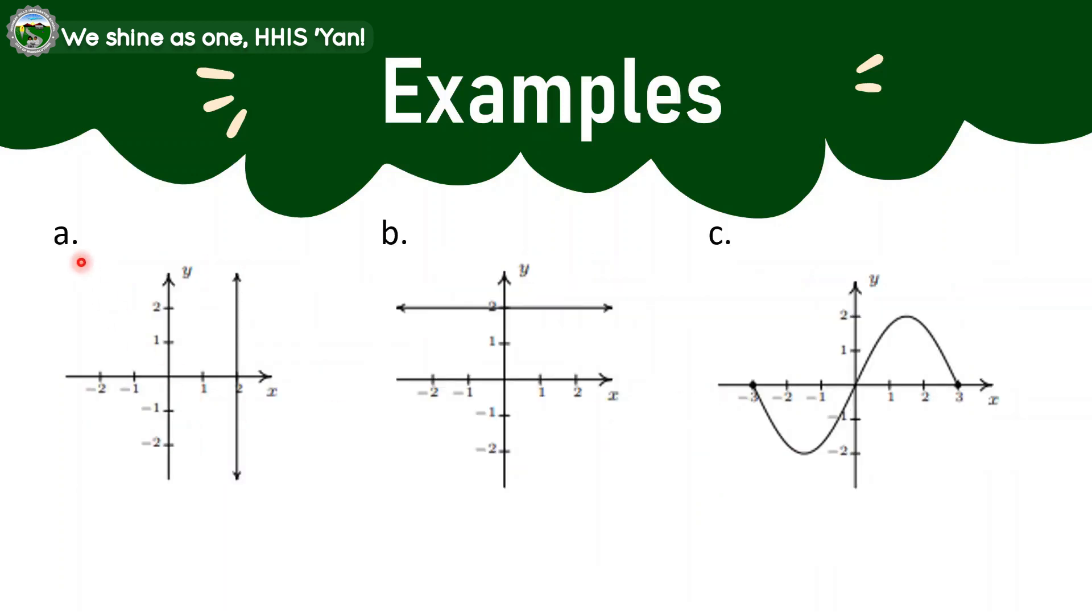Let's have the example A. So in here, draw a vertical line. So if you try to see it, that is touching to all the points in the given graph or in the given illustration. So the letter A is not a function.